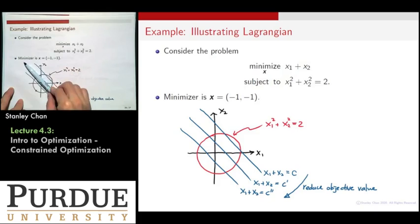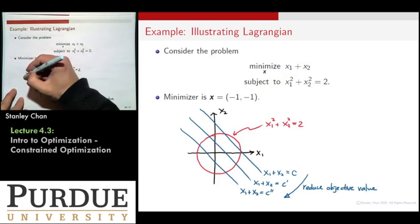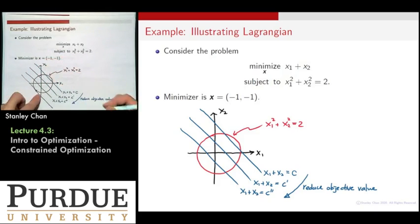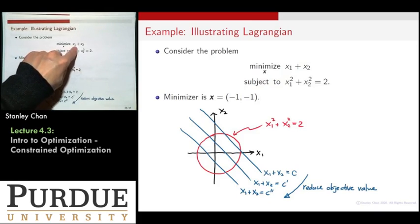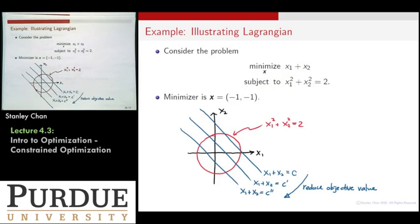So move this line until you hit here. This line will give you the lowest possible objective value. See that? And then it is also satisfying the constraint. So that would be your optimum point, and I claim that this minimizer is at minus one, minus one, for this problem.